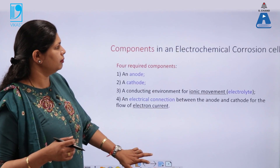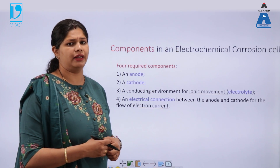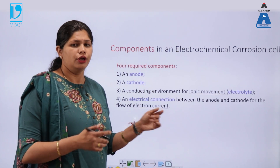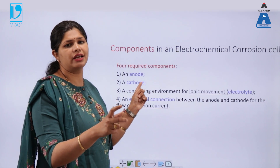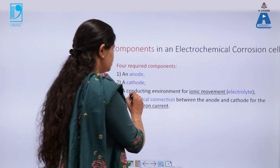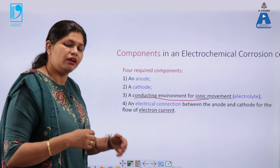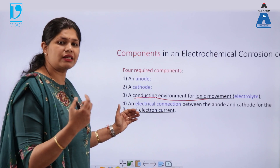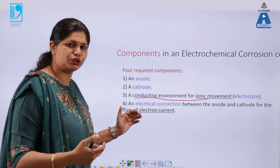When an electrochemical reaction takes place in corrosion, it is because of the presence of four components: we should have the anodic half cell, we should have the cathodic half cell, along with this we should have a conducting environment or electrolyte which helps in the movement of ions. This conducive environment is very important for a spontaneous reaction to take place.